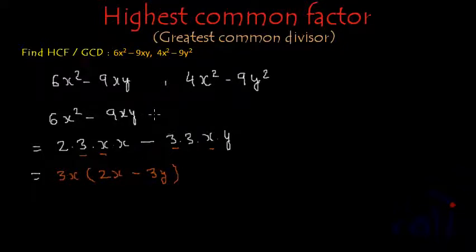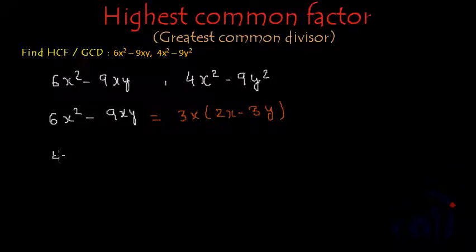So, the factors of 6x square minus 9xy are 3x multiplied by 2x minus 3y. These are the factors and now, let's find the factors of second expression which is 4x square minus 9y square.